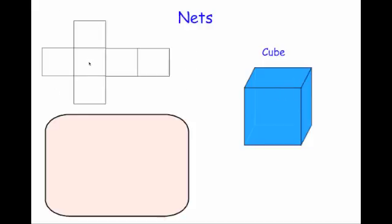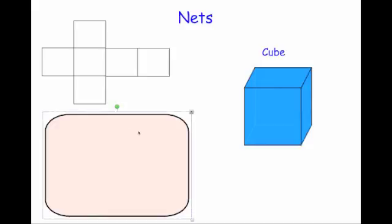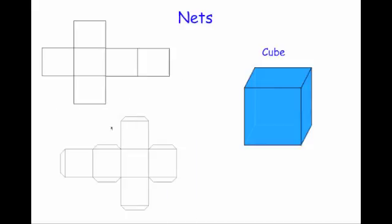This would be the base. These four sides here would be the back, the front, the right-hand side and the left-hand side, and this side would fold over to be the lid. Sometimes nets have these extra flaps put on them, and those would just be for if you were going to print it and then stick it and turn it into the 3D shape. These flaps are useful for sticking it together. So this is the net for a cube — you've got your six squares which fold together to make your cube and they're all in the right position.